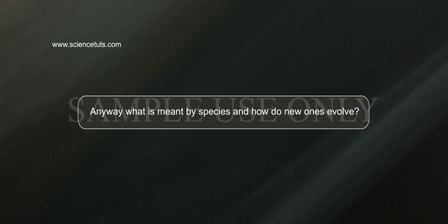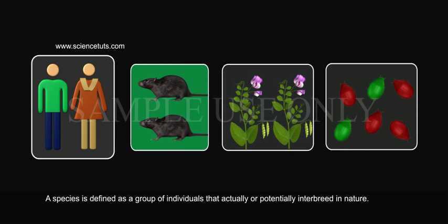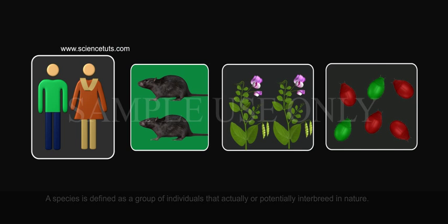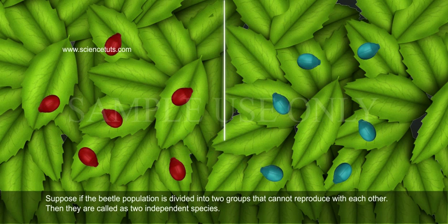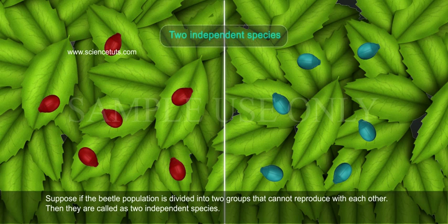What is meant by species and how do new ones evolve? A species is defined as a group of individuals that actually or potentially interbreed in nature. If the beetle population is divided into two groups that cannot reproduce with each other, then they are called two independent species.